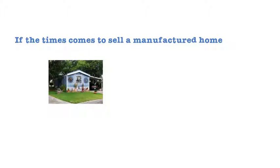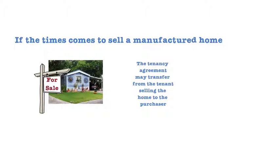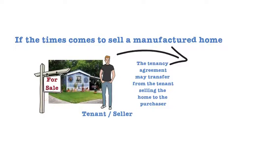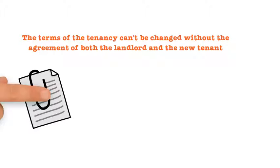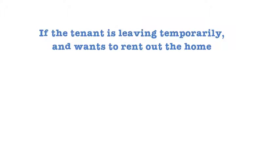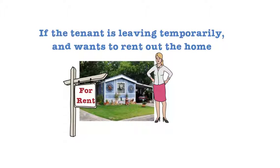If the time comes to sell a manufactured home, the tenancy agreement may transfer from the tenant selling the home to the purchaser of the home — this is called an assignment. The terms of the tenancy cannot be changed without the agreement of both the landlord and the new tenant. If the tenant is leaving temporarily and wants to rent out the home, this is called a sublet.